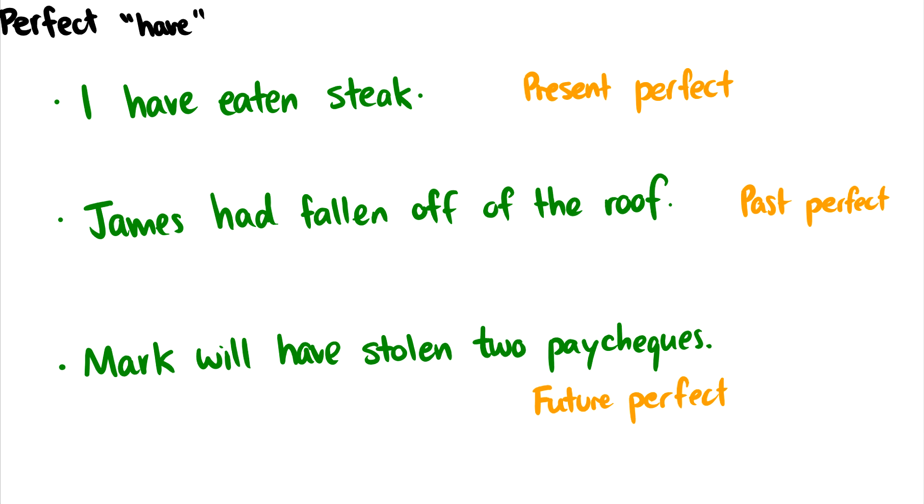In this video, we're going to look at perfect have and progressive be. So, perfect have is demonstrated in the following three sentences: I have eaten steak. James had fallen off of the roof. Mark will have stolen two paychecks.